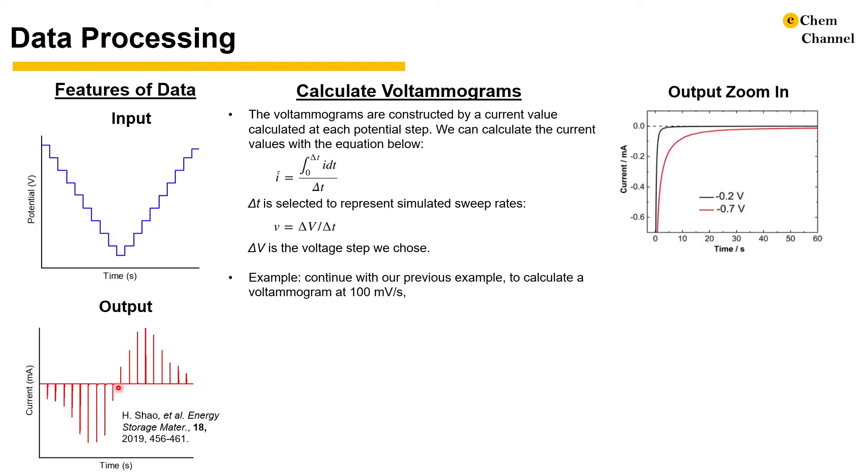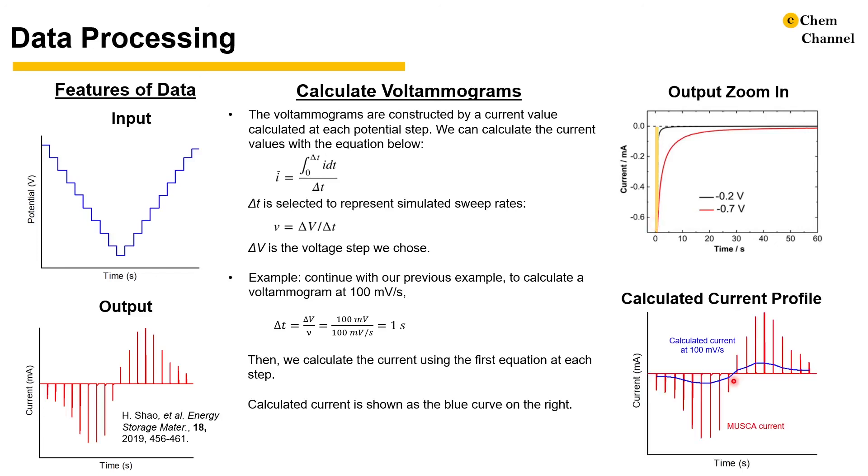To continue the example of the last slide, here we calculate the current assuming a sweep rate of 100 mV per second. Because we have a potential step of 100 mV, 100 mV per second will result in a delta t of 1 second. Then at each potential step, we calculate a current value by first integrating the current over 1 second, showing the yellow area here, and then divide the value by 1 second. The resulted current compared to the original current response is shown on the right.